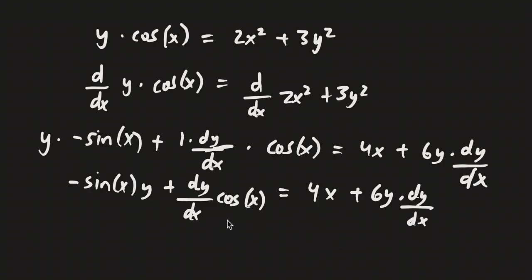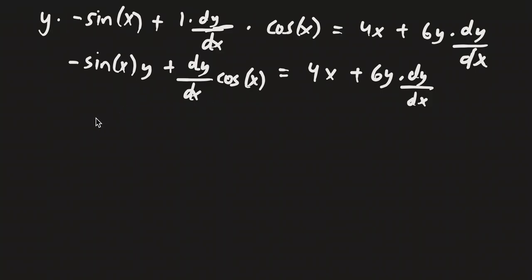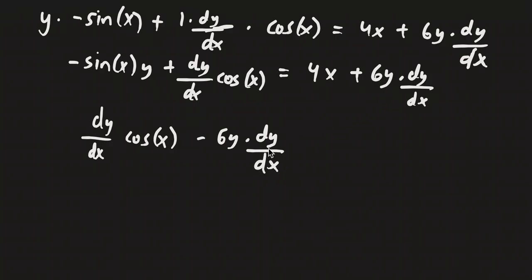Now we've got to isolate dy/dx. I'm going to add sine x times y to both sides and subtract 6y times dy/dx from both sides, all at once. This becomes dy/dx times cosine x minus 6y times dy/dx equals 4x plus sine x times y.